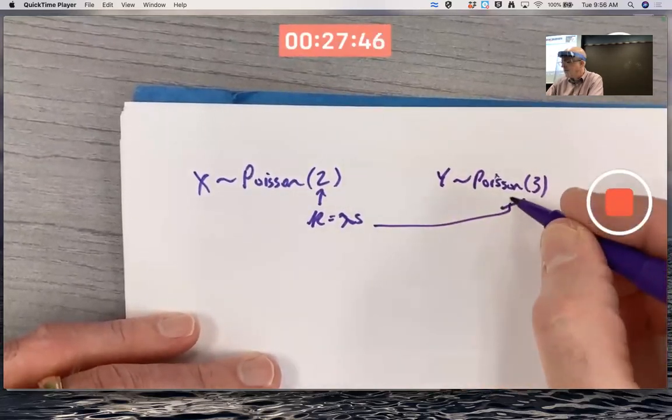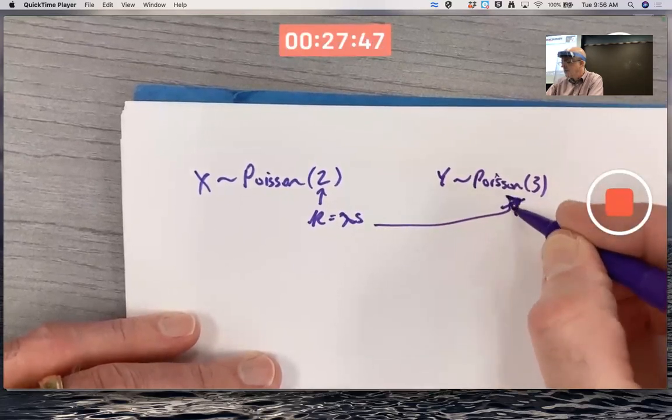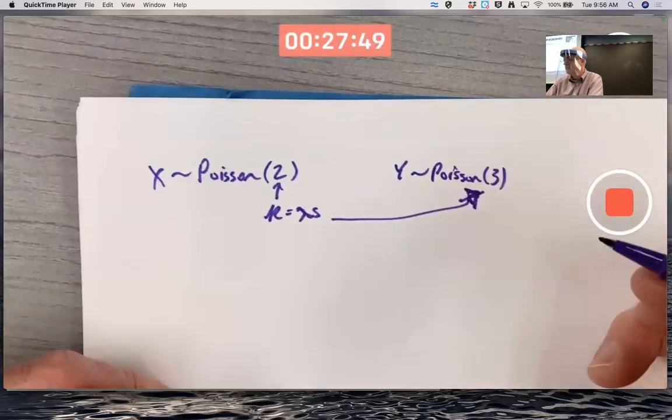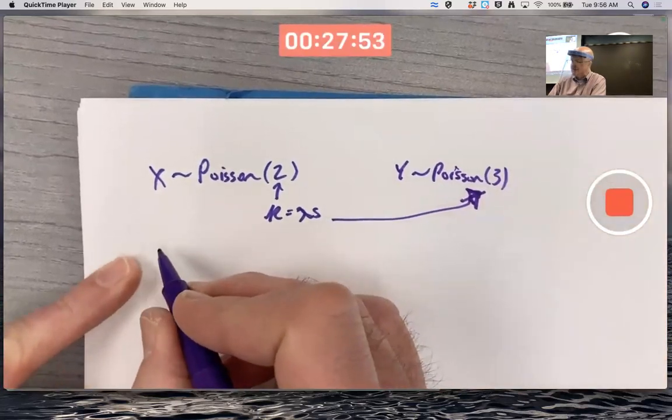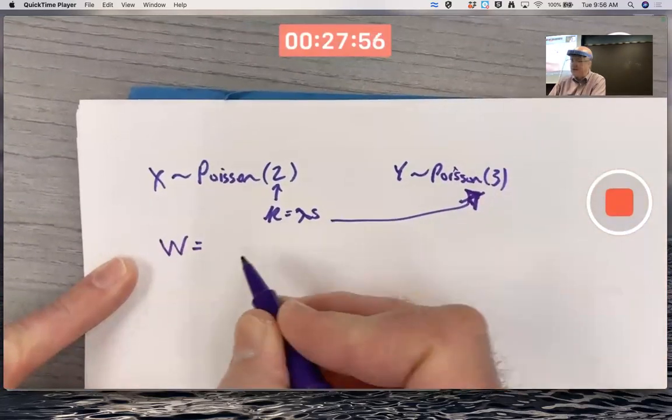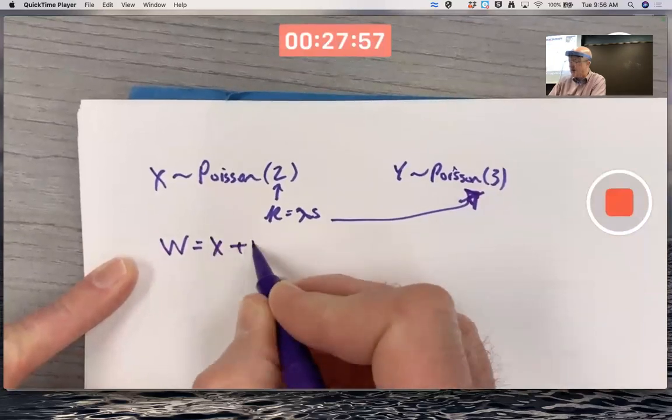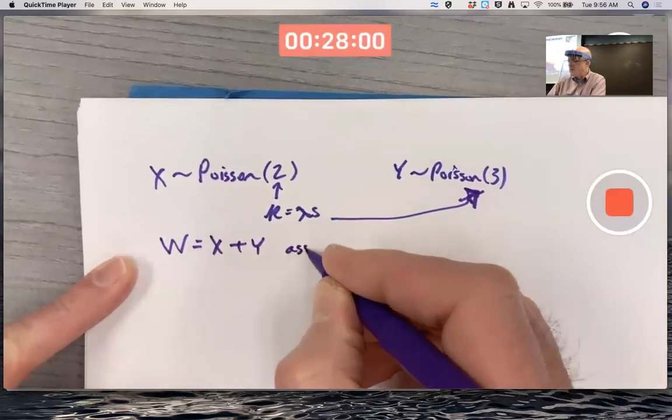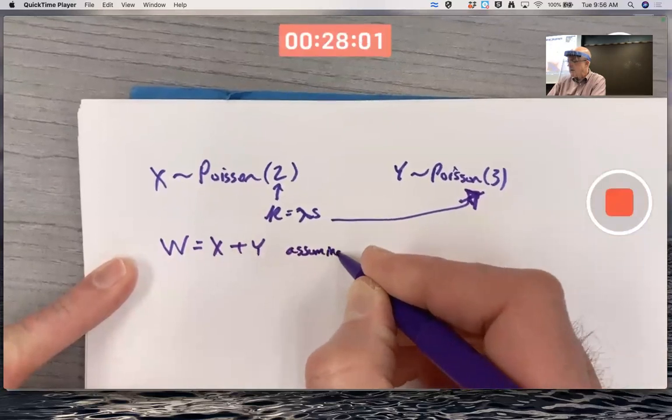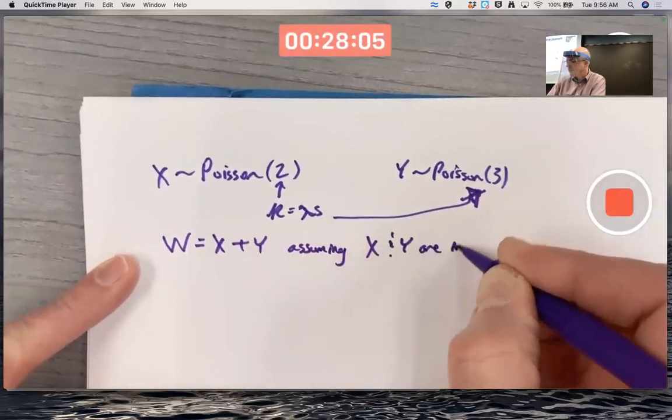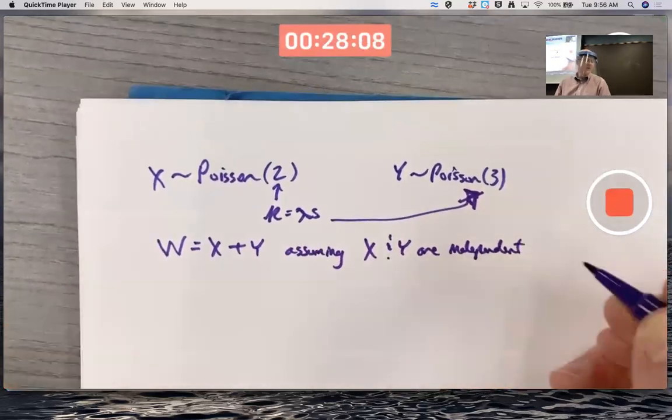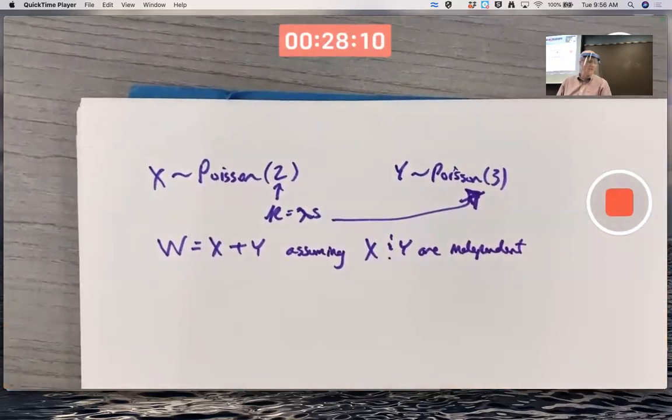And let's say Y is Poisson of mean 3. That's also K. That random variable. And let's probably make more sense to call it S, but I'm going to go ahead and call it W again. Let W be the sum of X and Y. And we'll make our usual assumption that X and Y are independent.